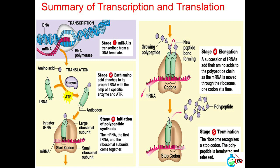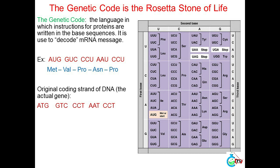Summary of transcription and translation. The genetic code is the Rosetta Stone of life — the language in which instructions for proteins are written in the base sequences. It is used to decode the mRNA message. Example: AUG GUC CCU AAU CCU → MET VAL PRO ASN PRO. Original coding strand of DNA (the actual gene): ATG GTC CCT AAT.